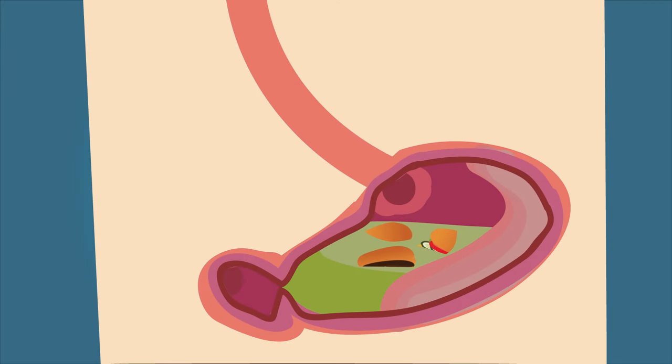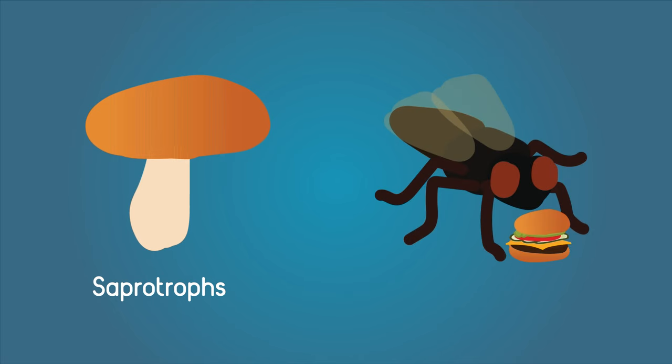Humans carry out internal digestion, as the food is digested inside our bodies. However, other organisms digest food outside their bodies. Fungi, for example, are called saprotrophs. This means that they secrete enzymes out of their cells onto food around them and then absorb the nutrients once they have been broken down.